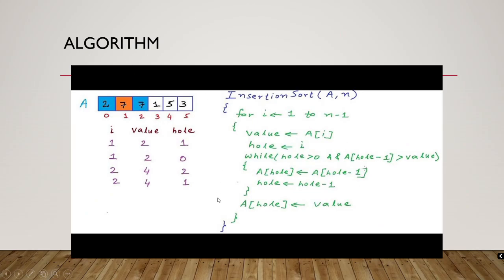This is a basic algorithm I given and with another example. I have given another example: 2, 7, 1, 5, 3. I have marked the indexes. As you can see 0, 1, 2, 3, 4, 5. i is the index.